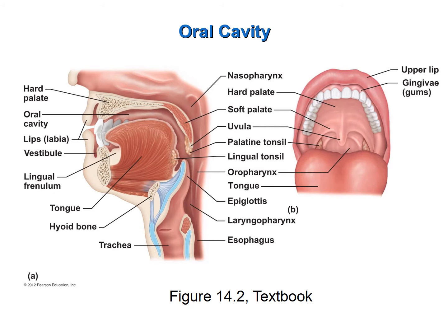Let's look first at the sagittal view. The oral cavity is separated from the nasal cavity by the hard palate — that's the bony portion of the roof of the mouth. Posterior to that is the soft palate, which also includes the uvula. The uvula is that little fleshy structure that hangs down and plays a very important role in swallowing.